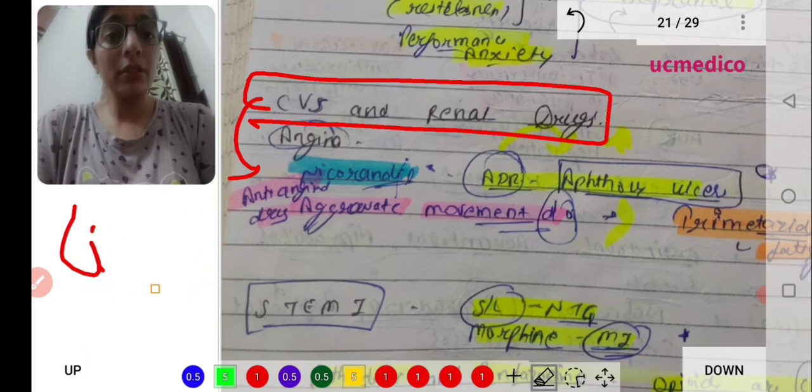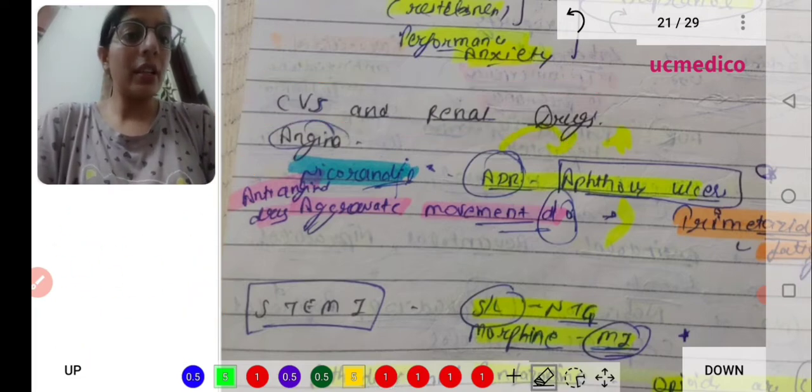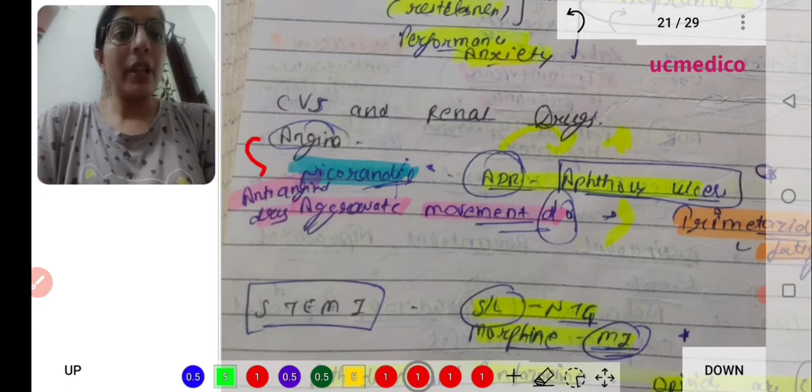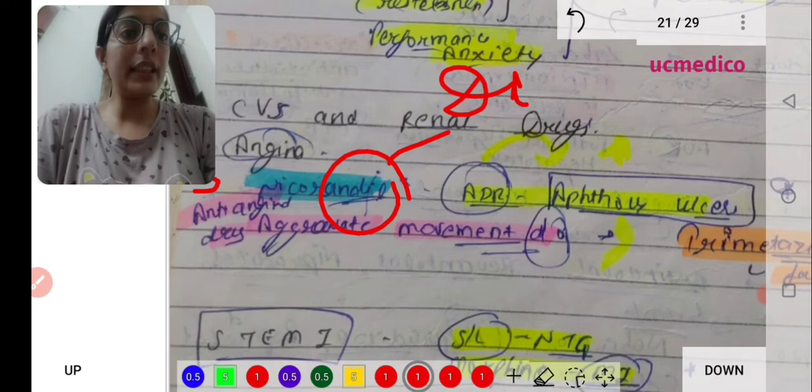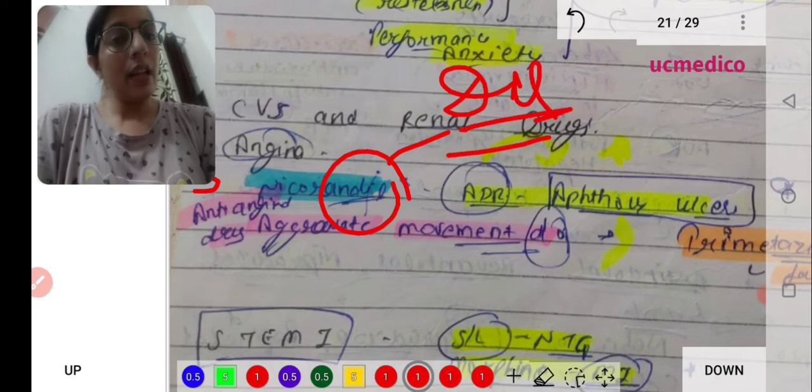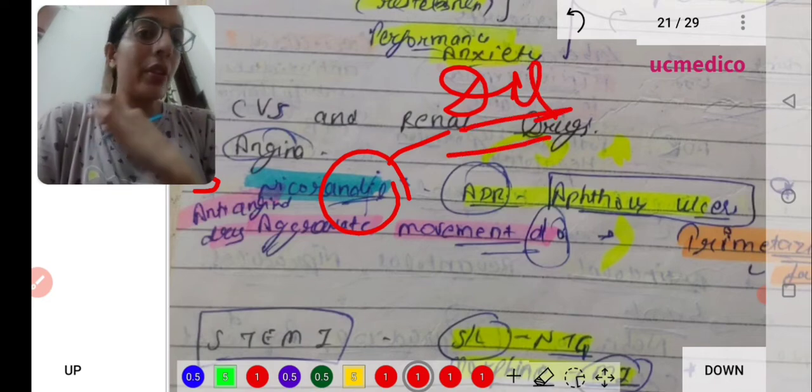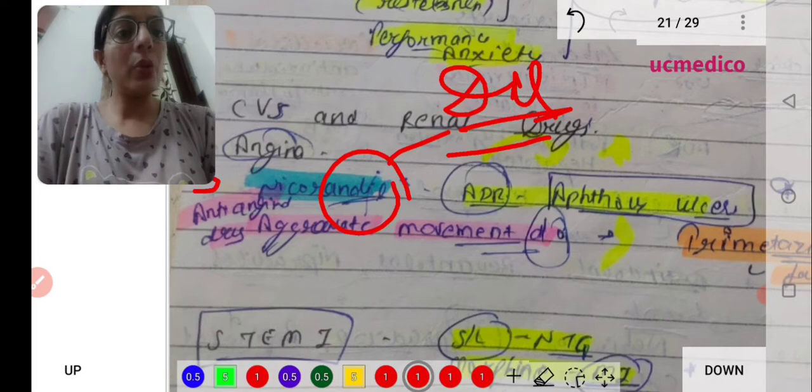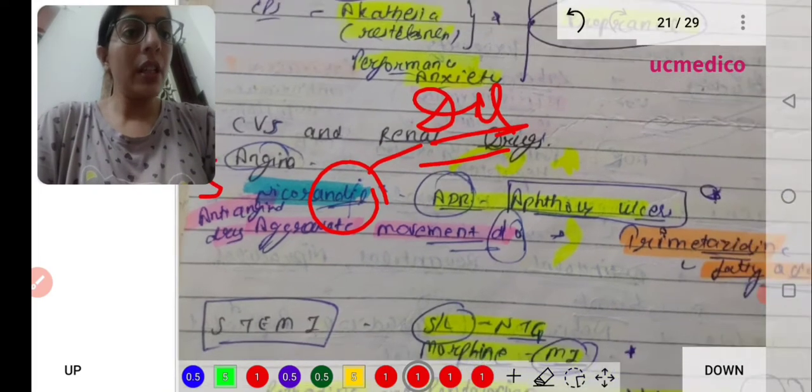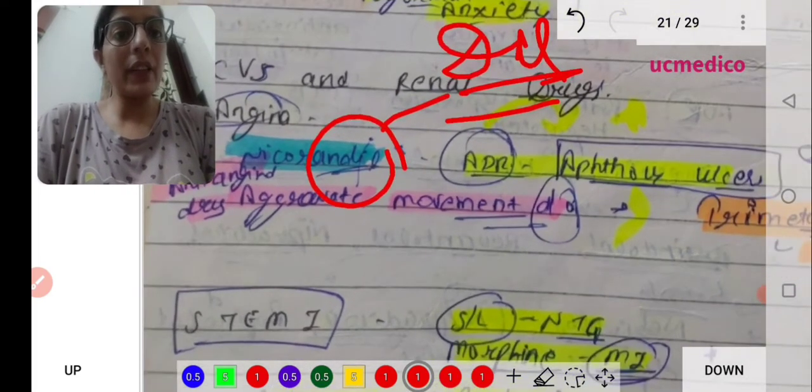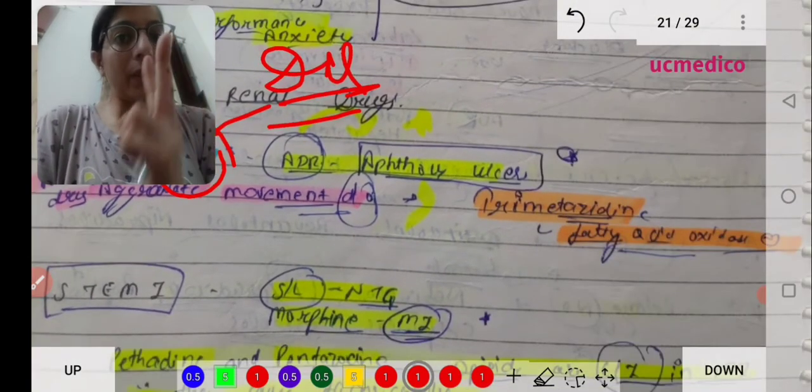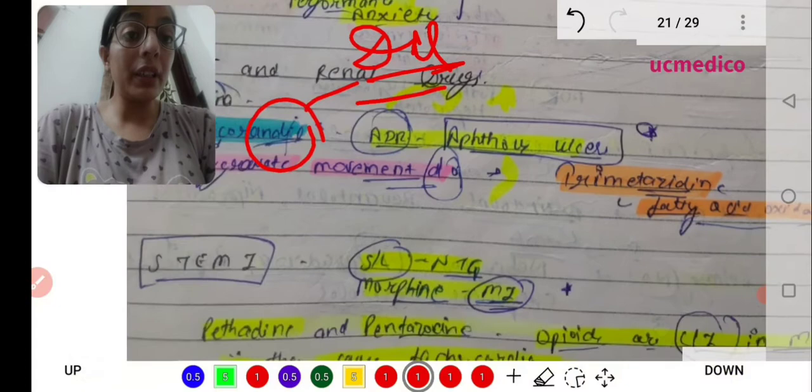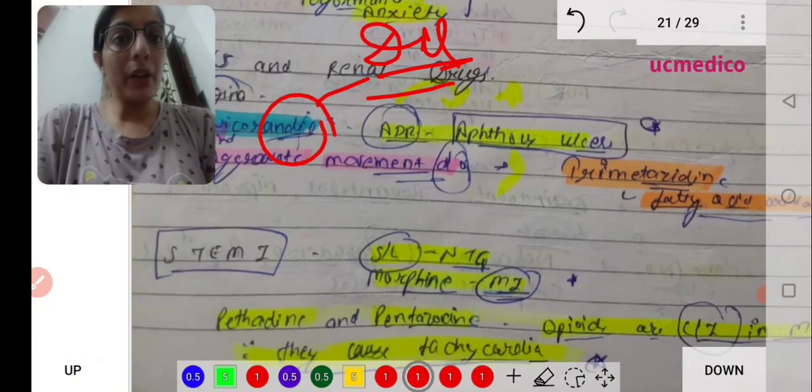Please do not forget to like, share, and subscribe. Let's start with angina. Nicorandil is an important drug. This is a prostrate drug. The important reaction is aphthous ulcer. The drug which aggravates movement disorder is trimetazidine, and ramipril is an ACE inhibitor.